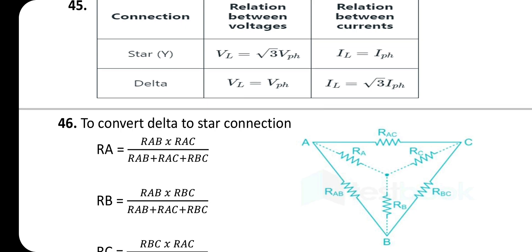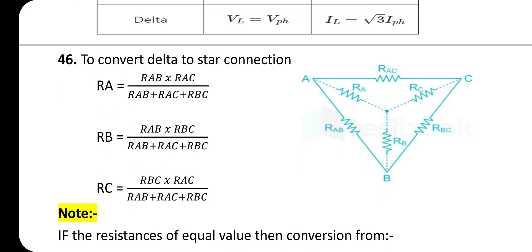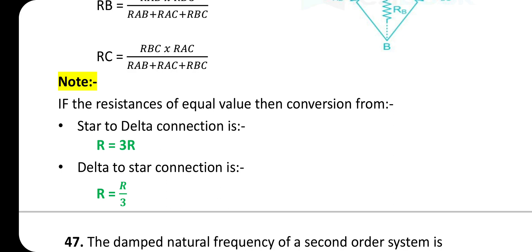To convert delta to star connection: R_A = (R_AB × R_AC) / (R_AB + R_AC + R_BC); R_B = (R_AB × R_BC) / (R_AB + R_AC + R_BC); R_C = (R_BC × R_AC) / (R_AB + R_AC + R_BC). If all resistances are equal: star to delta gives R_Δ = 3R; delta to star gives R_Y = R/3.